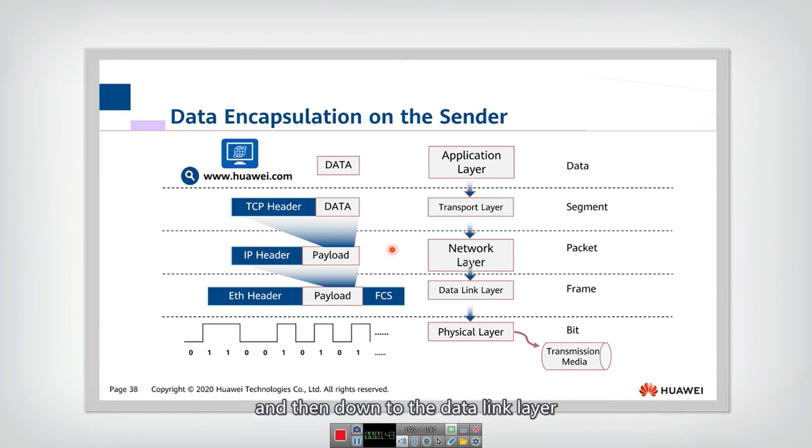And then down to the data link layer. In the data link layer, they will send this whole package as the payload and then add both a header and a tail. For the header, they will put, for example, the source MAC address and destination MAC address. For the tail, they need to put in some CRC bits to check whether this package is correctly transmitted.